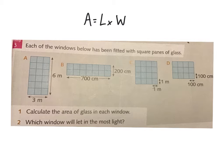In window A, we can see that there's 6 meters by 3 meters. There's 3 square meters along the bottom, 6 square meters up the side. So you use your formula to work out the square meters, how much glass there is in window A.